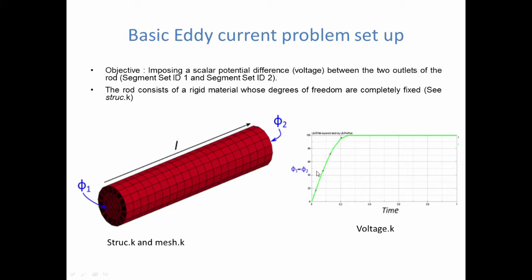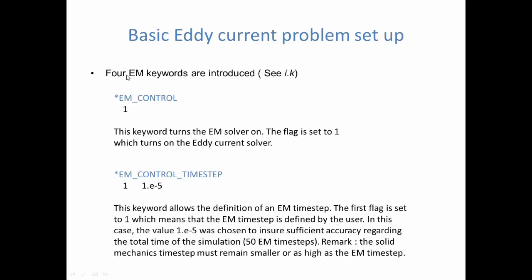So in order to do that, we will introduce four EM keywords. The first one we will call EM control and what it does, it basically turns the electromagnetic solver on. And for us, for our metal forming applications, we will need to turn on the eddy current solver, which is the solver type 1.